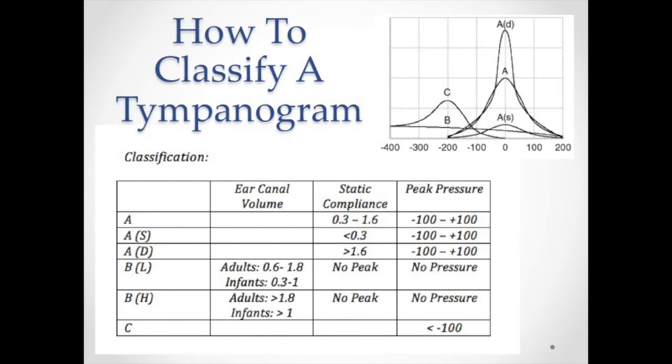You'll obtain three recordings from a tympanogram: the ear canal volume in centimetres cubed, the static compliance in millimhos, and the pressure at which we obtain the maximal compliance in decapascals. These results can be used to classify the tympanogram into three broad categories: A, B, and C.